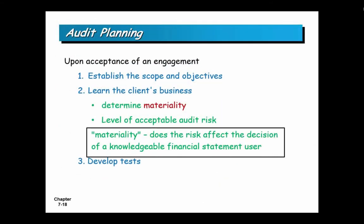The planning stage starts with establishing the scope and objectives, and then learning your client's business. You really need to determine what's material and what's not material. Materiality answers the question: does the risk affect the decisions of a knowledgeable financial statement user? In a lot of terms, is the dollar size big enough? And in the case of a control, if there's a problem, would the result of that problem potentially have a meaningful impact on the business? After you determine what's material, you determine what's the level of acceptable risk, and then you develop your tests — internal controls and substantive testing — to determine how you're going to test the IT environment.